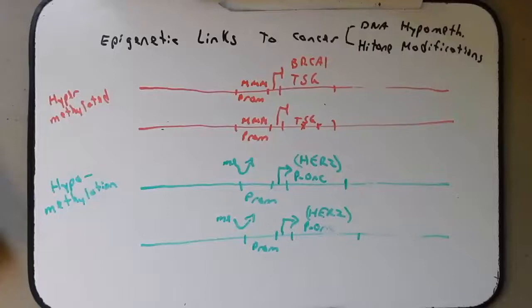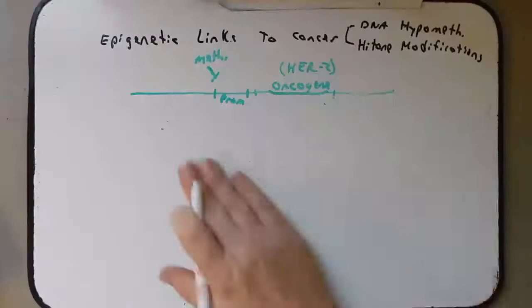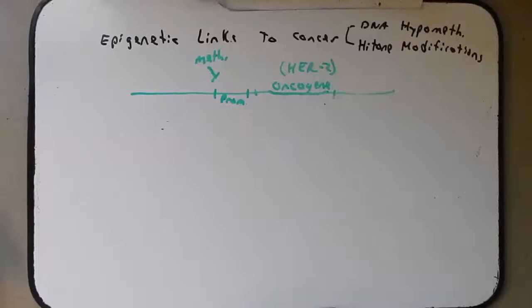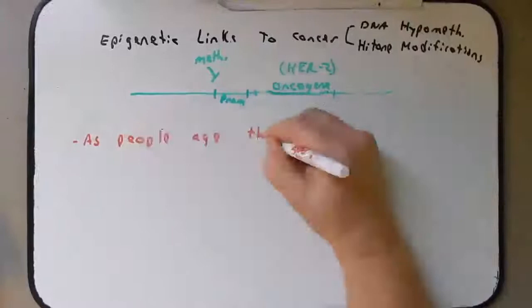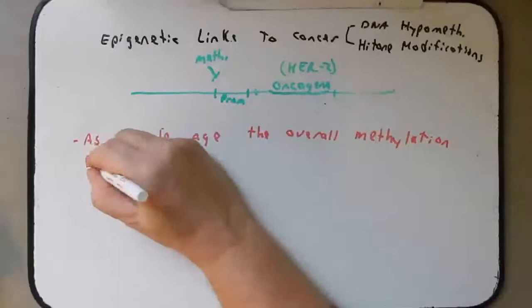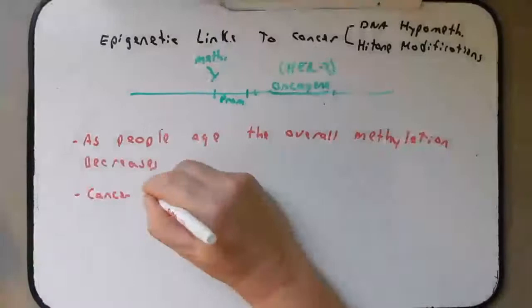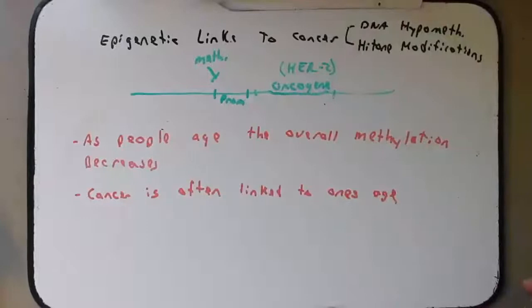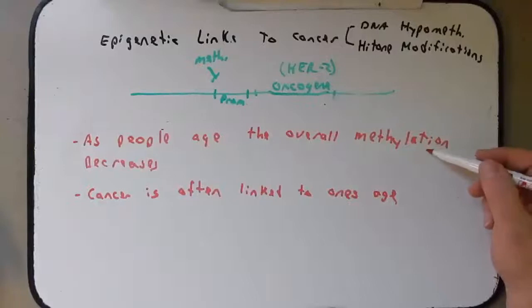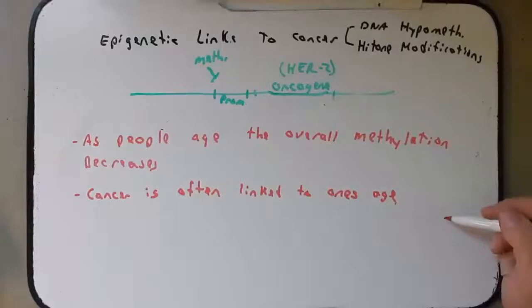Now less is known about hypomethylation and how it's linked to cancer. There are a few examples, but there's less known about that compared to hypermethylation as it relates to tumor suppressor genes. However, remember that as people age the overall methylation decreases. So as we age, hypomethylation is much more common, and cancer is often linked to one's age — cancer is often a disease that increases as one ages. The correlation between decreased methylation as one ages and cancer rising as one ages suggests that hypomethylation may play a role in cancer progression.